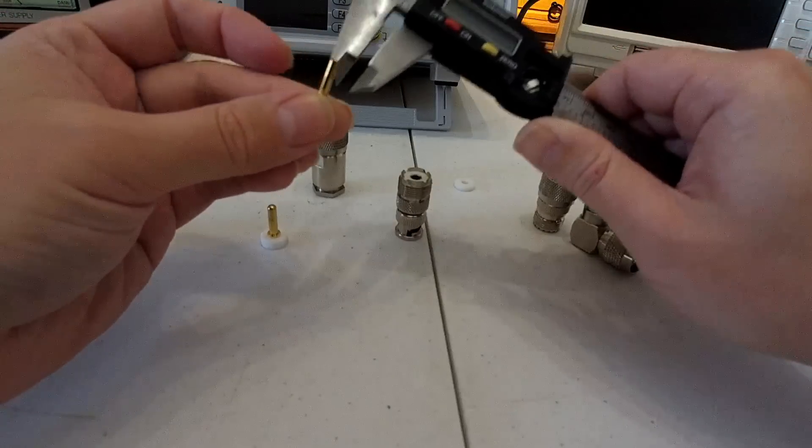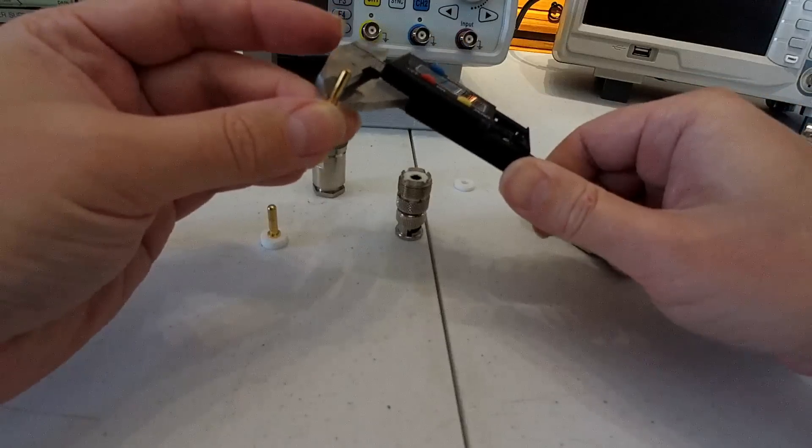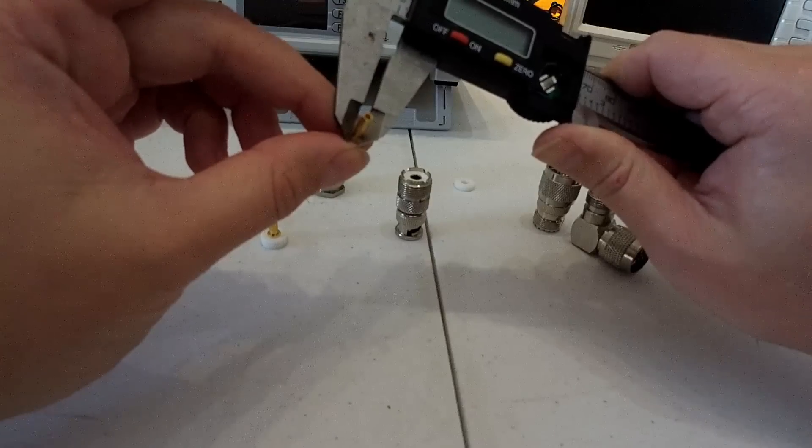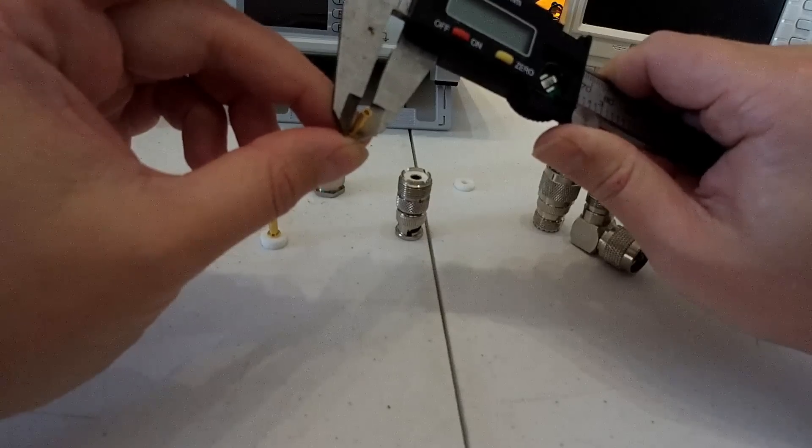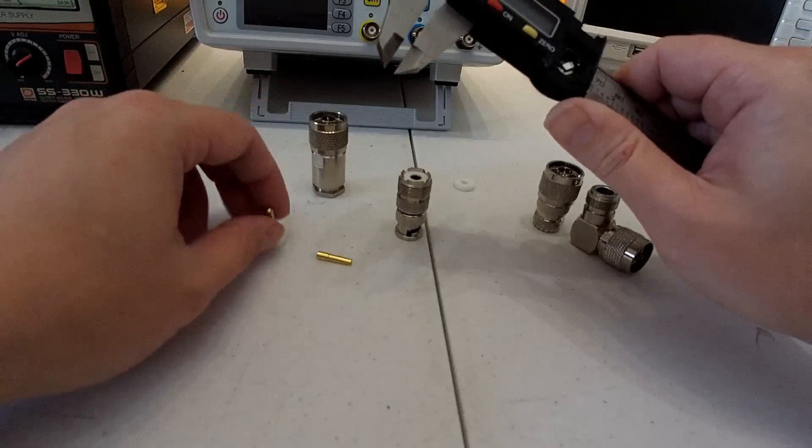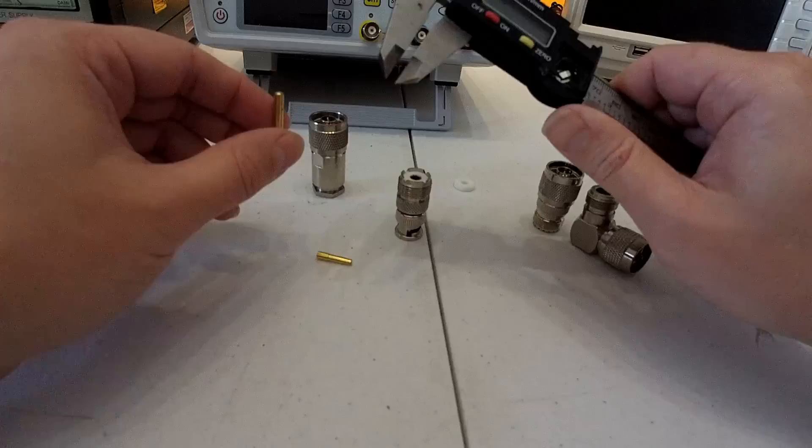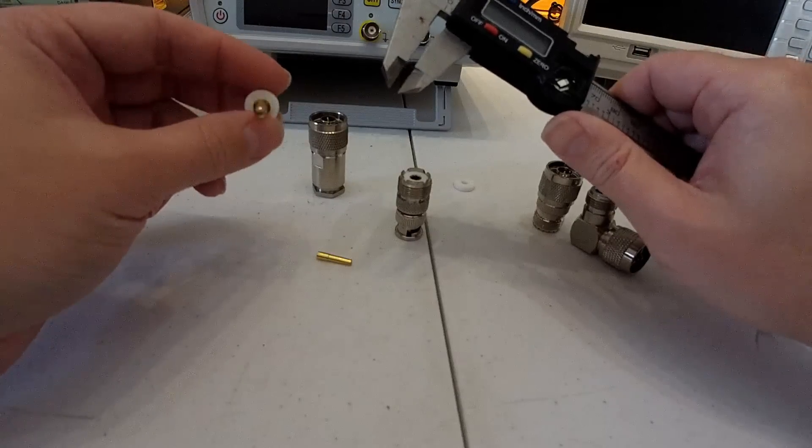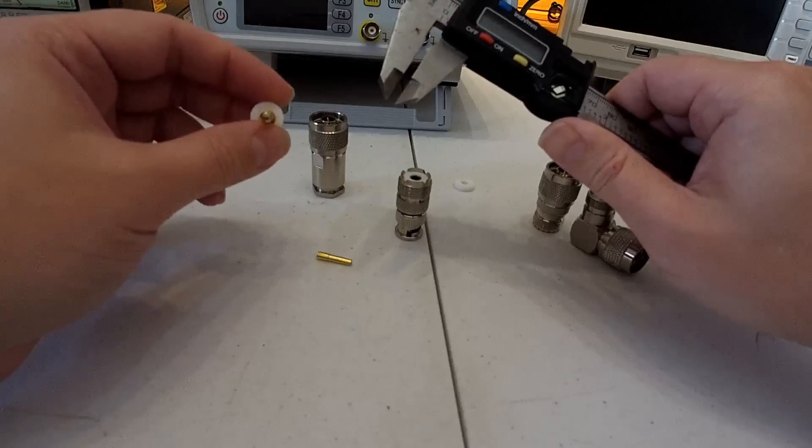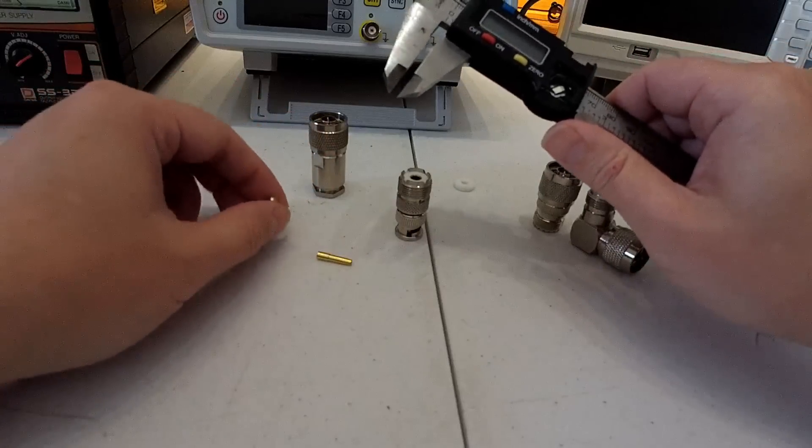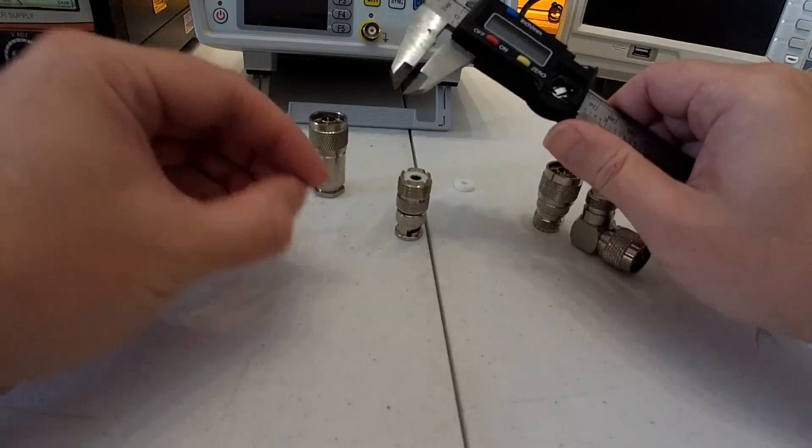On the N, we're going to measure from not quite the first part but a little bit lower, because that obviously spreads out when the male pin goes in. On the N we've got three millimeters, we're just under three.